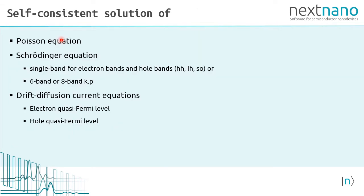So we need a self-consistent solution of the Poisson equation, the Schrödinger equation and the drift diffusion current equations. For the Schrödinger equation, we could use a single band model for all electron and all hole bands or a six band model for the holes or an eight band k dot p model that includes electrons and holes in one Hamiltonian.